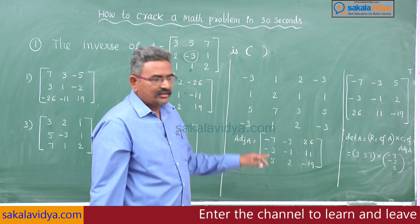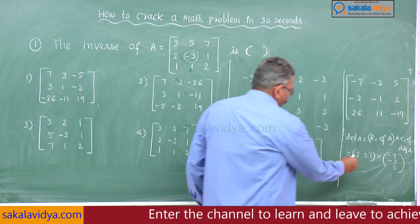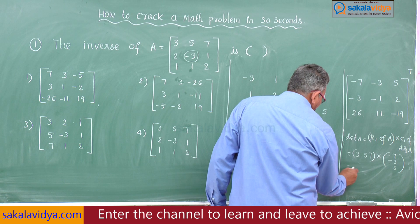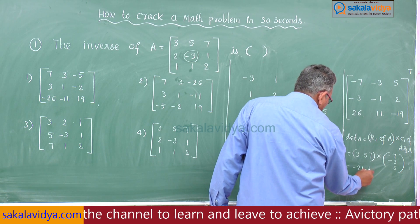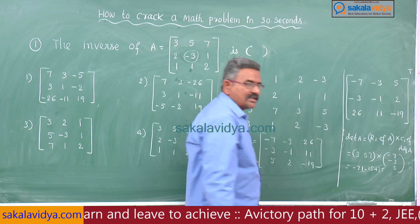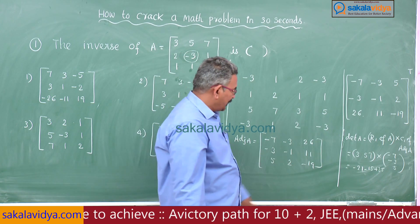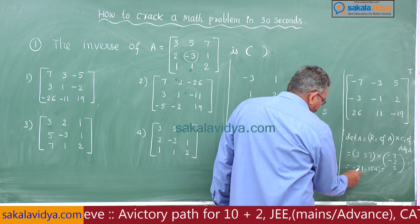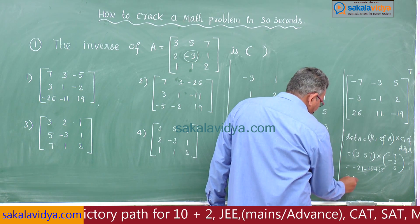This is row by column: -21, -15 plus 35. 35 minus 15 is how much? 35 minus 15 is plus 20, -21 plus 20 is -1.